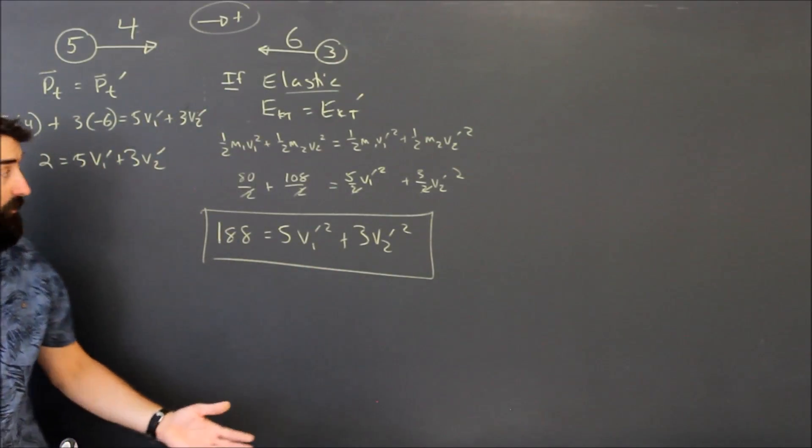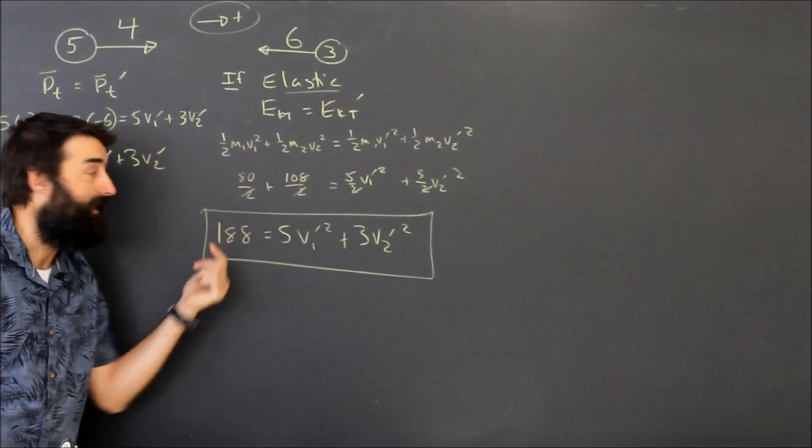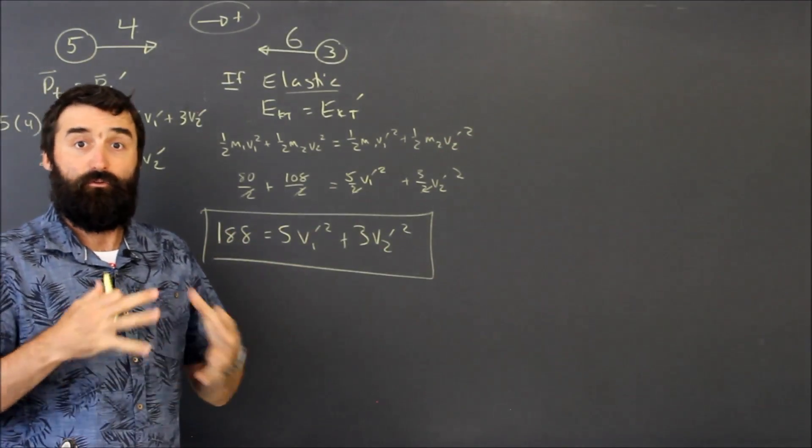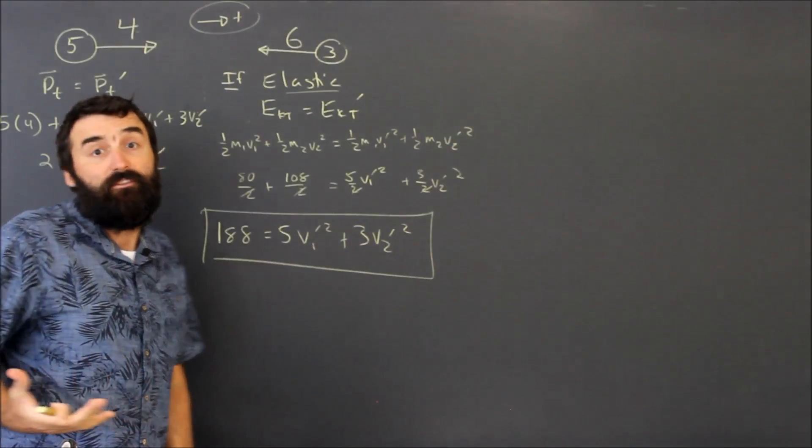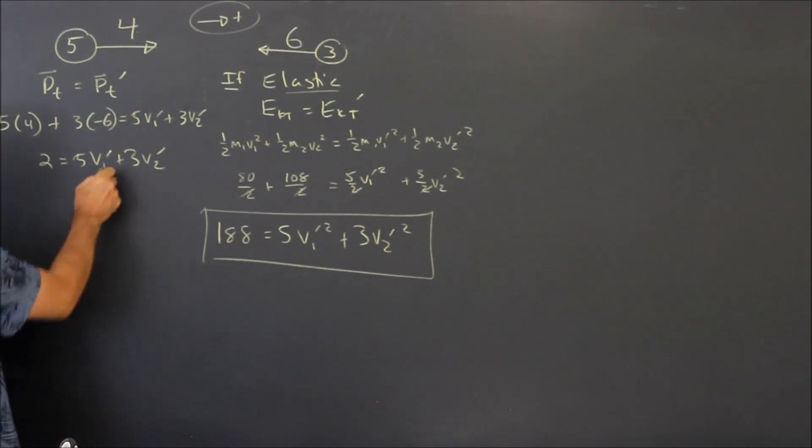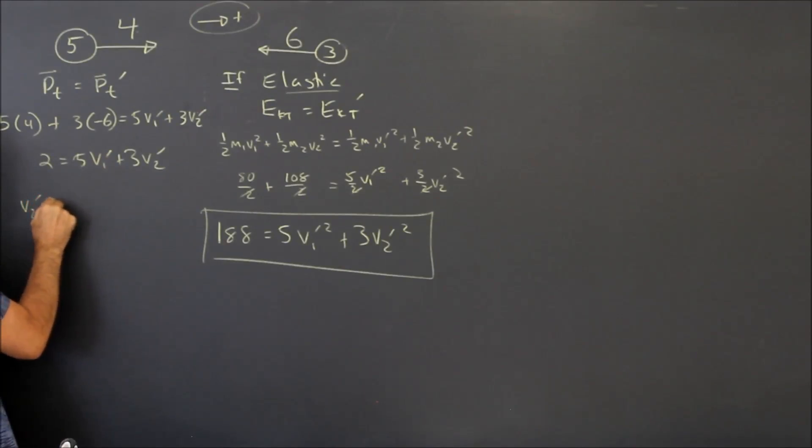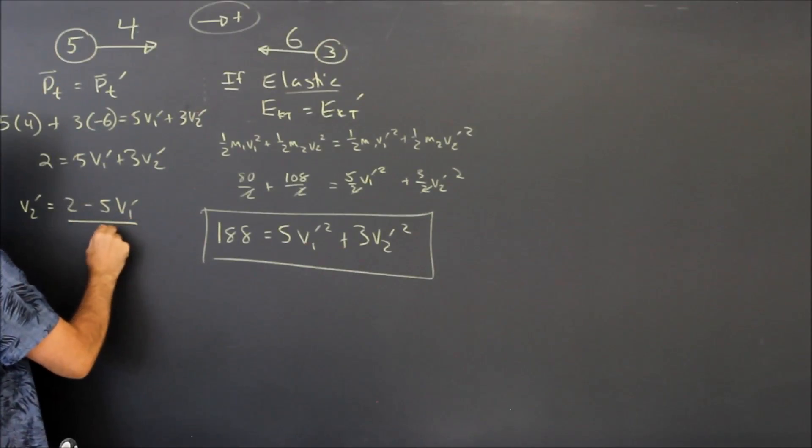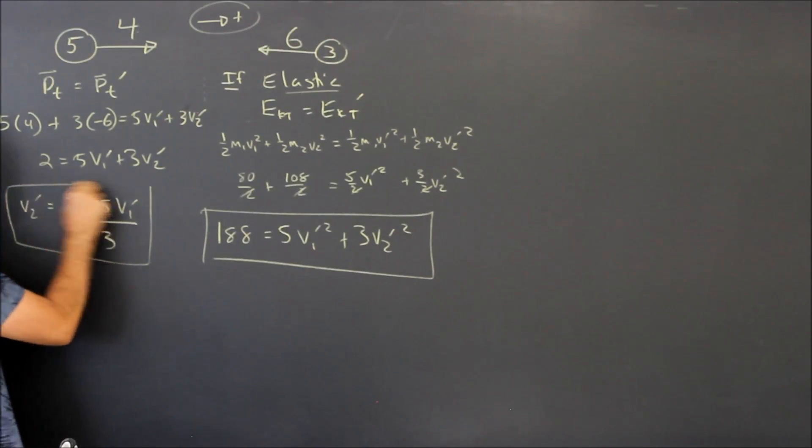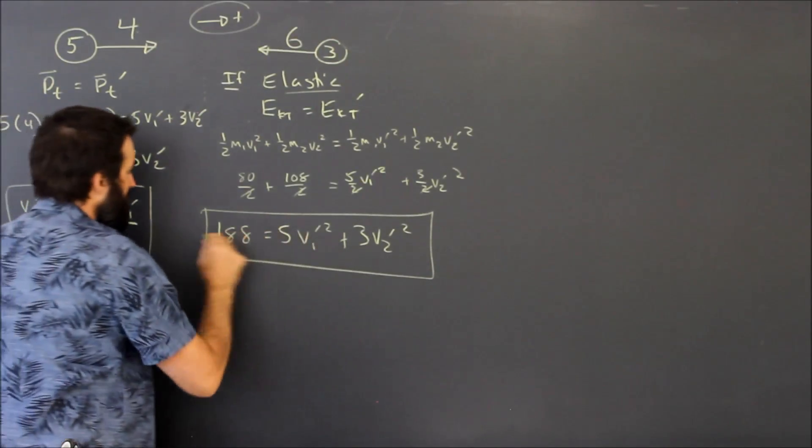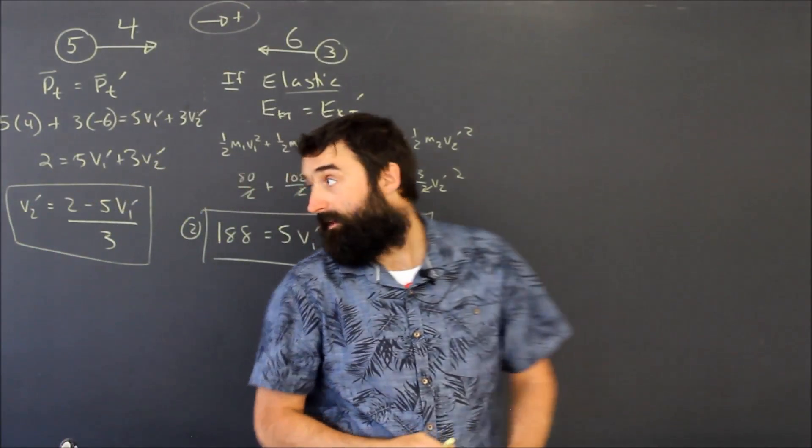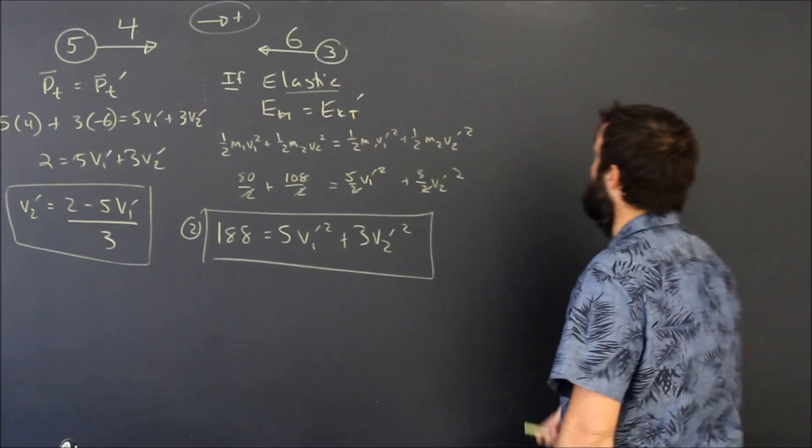That's another equation with the same two unknowns that I had a moment ago. So I've got two equations, two unknowns, and everyone in grade 10 math knows how to solve that. So that's what I'm going to do. I'm just going to solve the two equations, two unknowns. I'm going to start by rearranging this momentum equation for v two prime. V two prime is equal to two minus five v one prime over three. And I'm going to call that equation number one. I'm going to call my energy equation here equation number two.